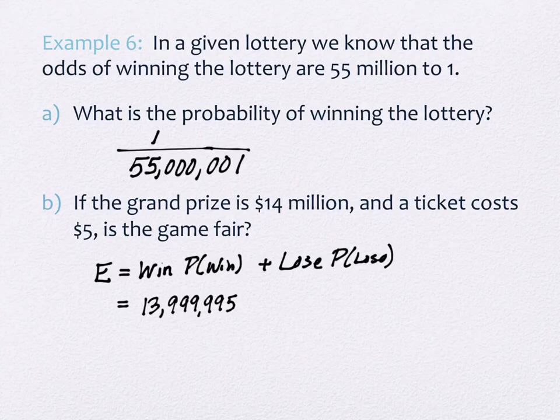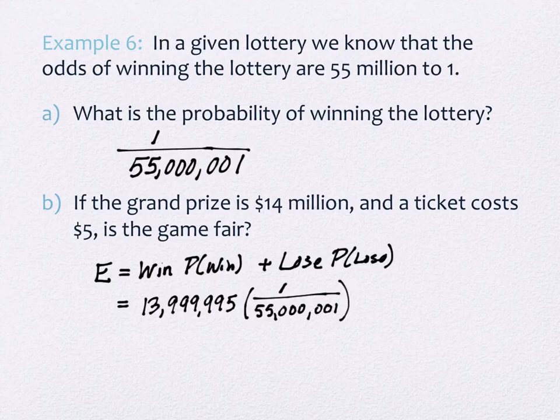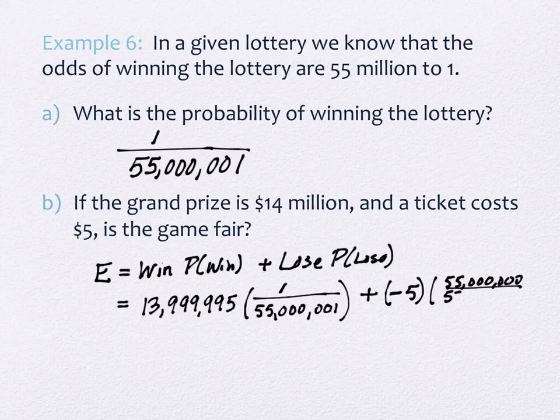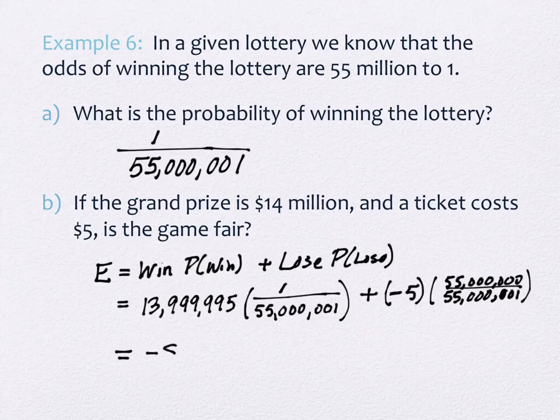And then what's the probability that you won? One out of 55 million one. So if you lose, what do you lose? Five dollars. So it's a negative five. There are only two outcomes. And what's the probability that you lose? 55 million over 55 million one. You might as well just say one. Gonna lose. This is actually equal to negative four dollars and 75 cents.